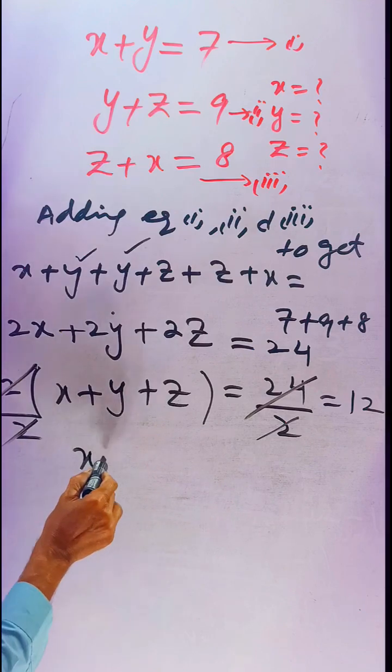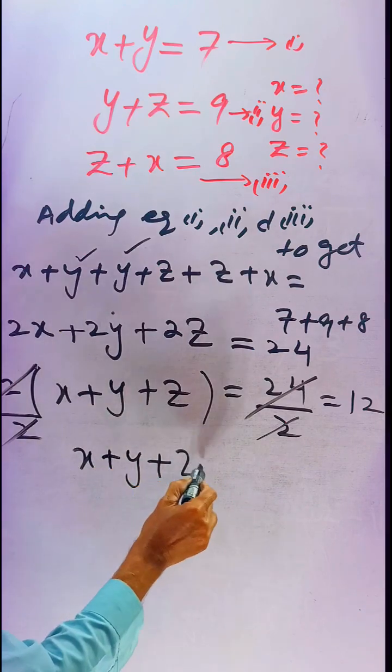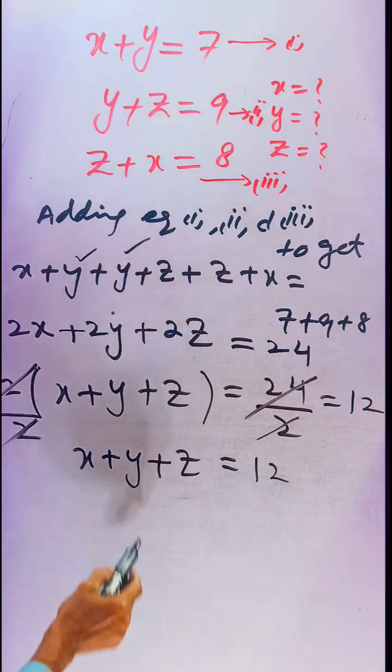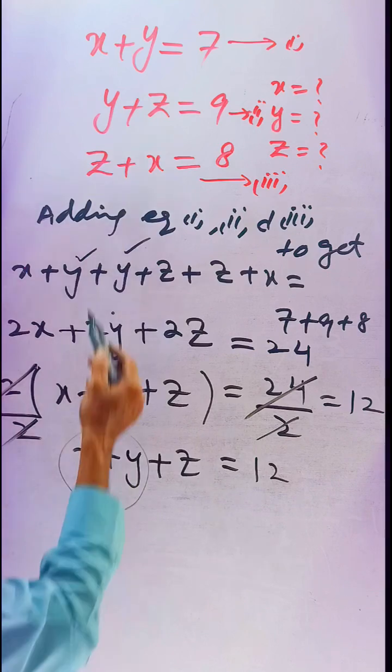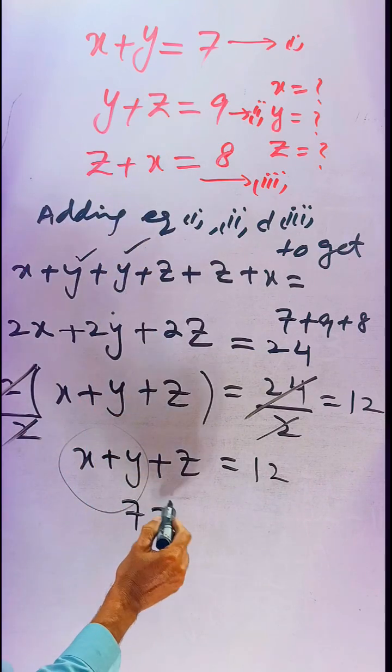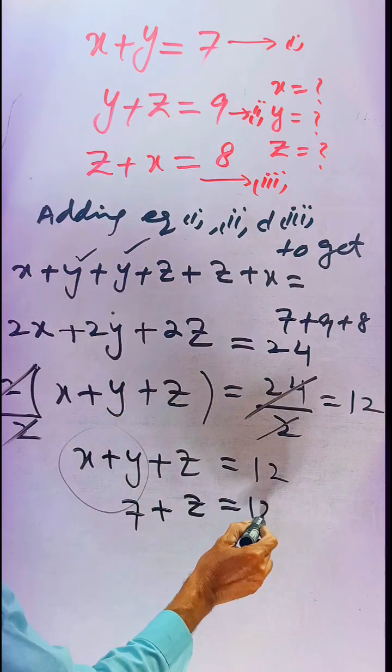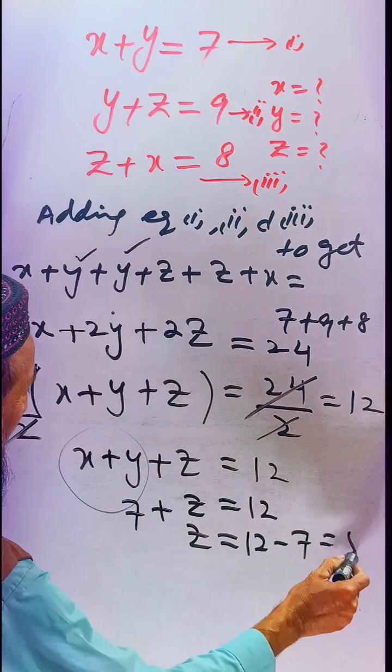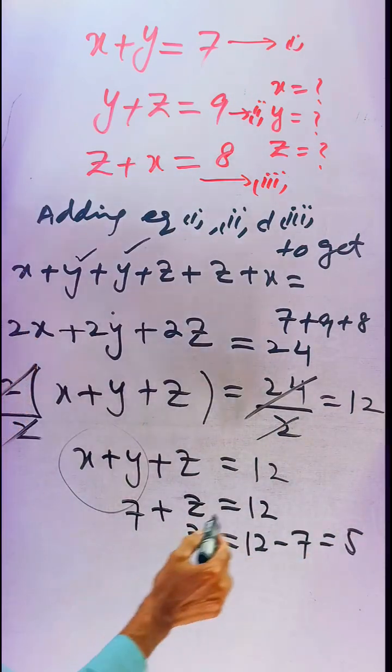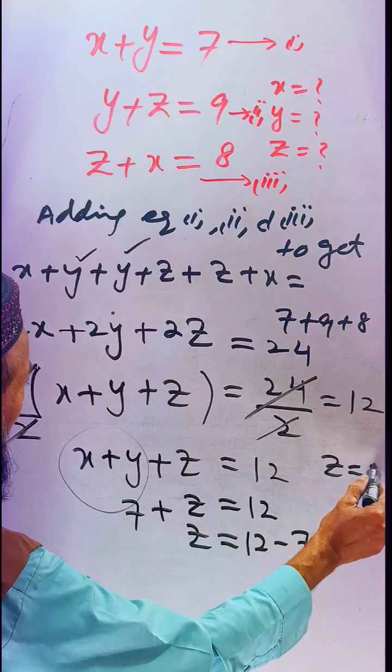Now we know from the first equation that x plus y equals 7. So 7 plus z equals 12. Therefore, z equals 12 minus 7, which is 5. So z equals 5.